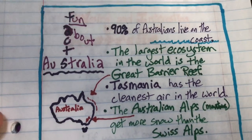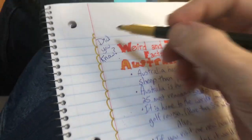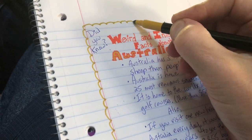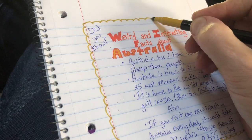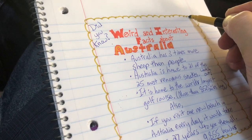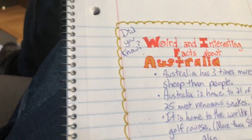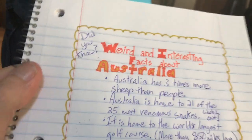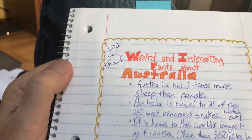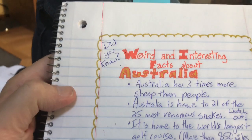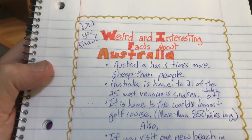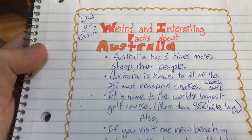I found these interesting facts in my research and put them together into this little fun text box, and you can do the same. Here I'm finishing up another text box called 'Weird and Interesting Facts About Australia.' I'm doing a nifty little border — just being fun and silly. Some people call this a 'Did You Know' text box, because these are facts that are a little different and that people might find surprising.